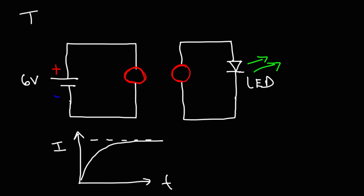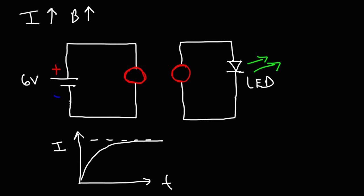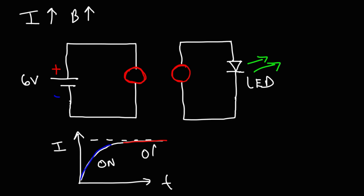When the current is increasing in an inductor, the magnetic field is increasing. Whenever you change the magnetic field or the area of the coil, there's going to be a change in flux, which means there's going to be an induced current in the second coil. So while the current is increasing — that portion of the graph — the LED will be on. When the current is relatively constant, the magnetic field is no longer changing to any appreciable extent, so the LED will be off. When you first connect the battery, you'll see the LED flash for a brief time, and then it will turn off.